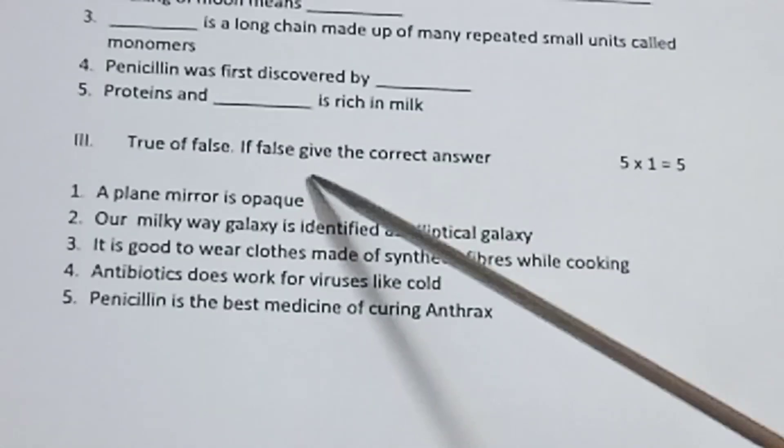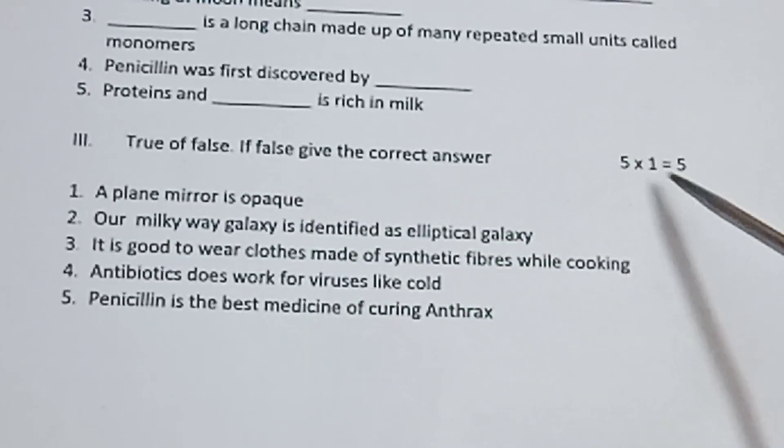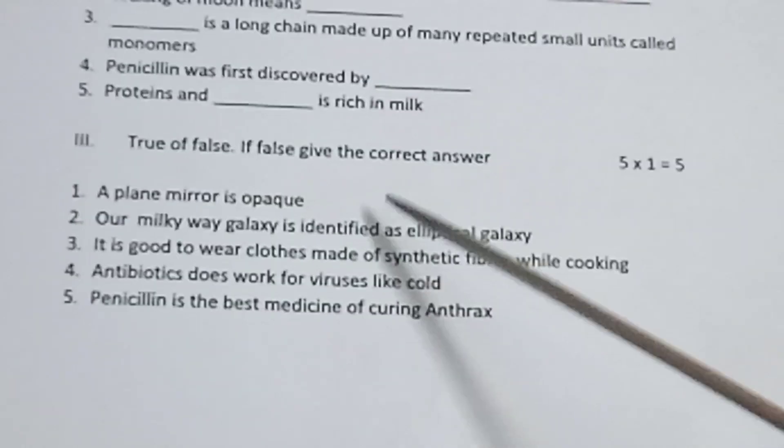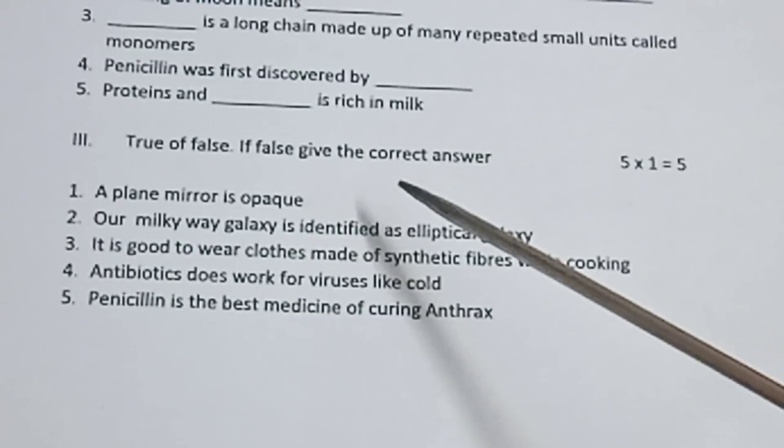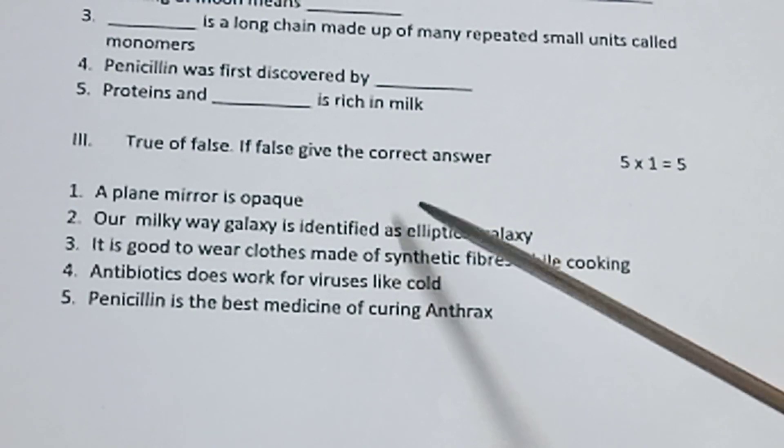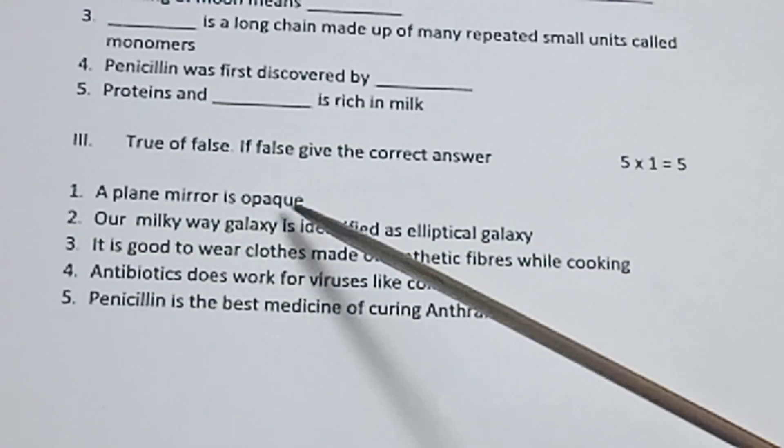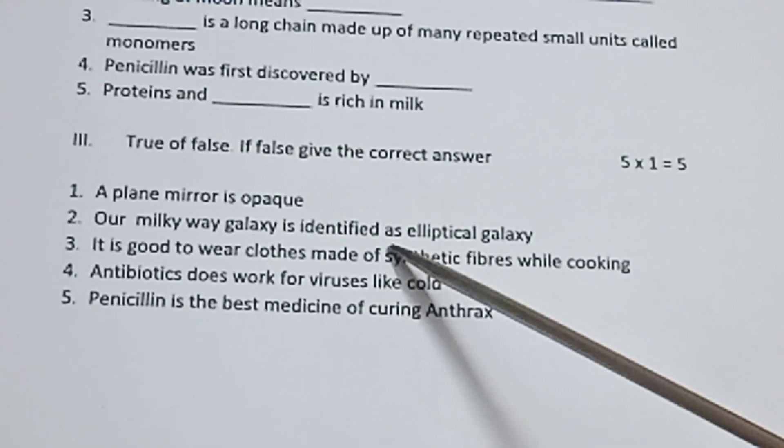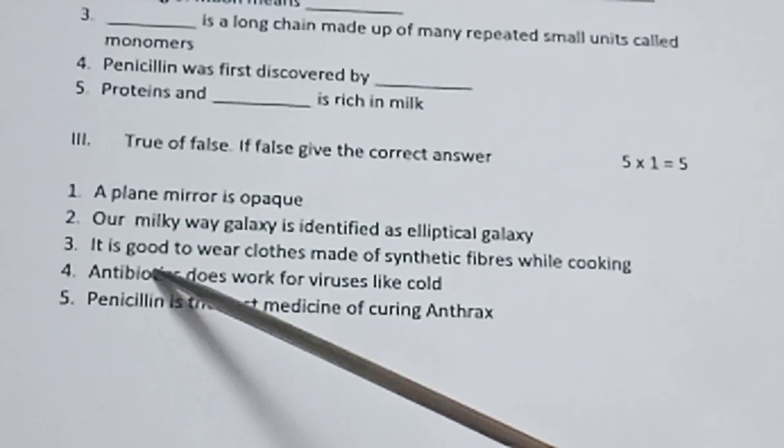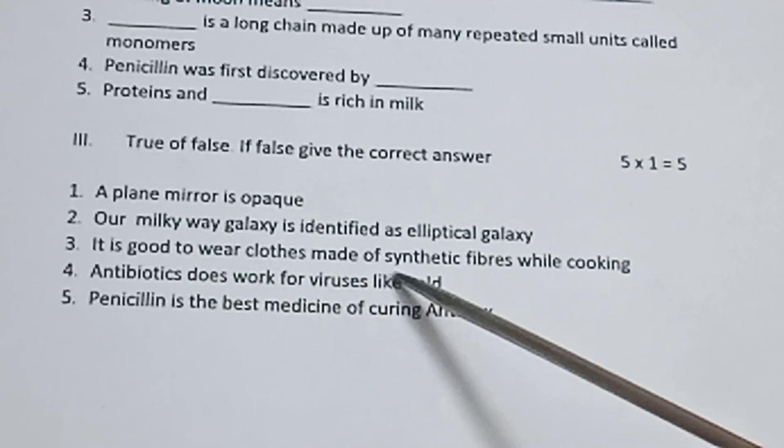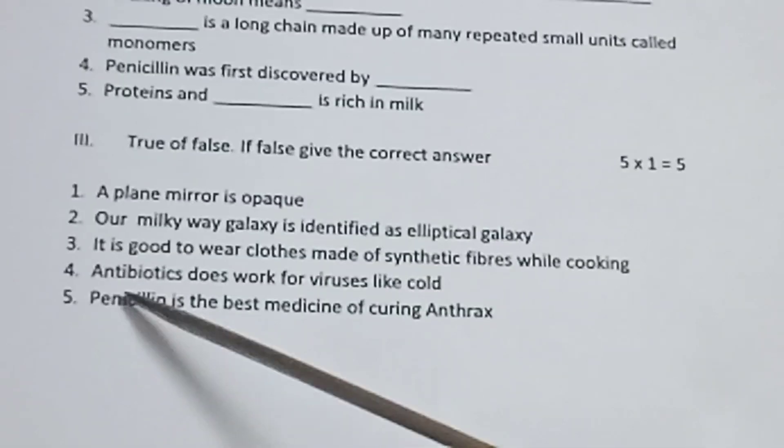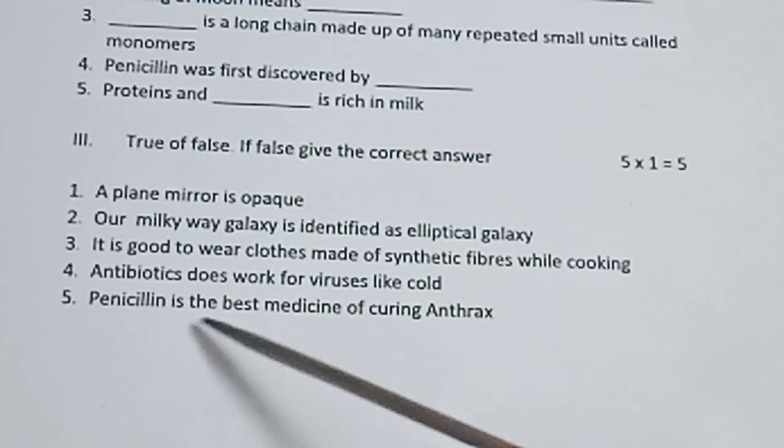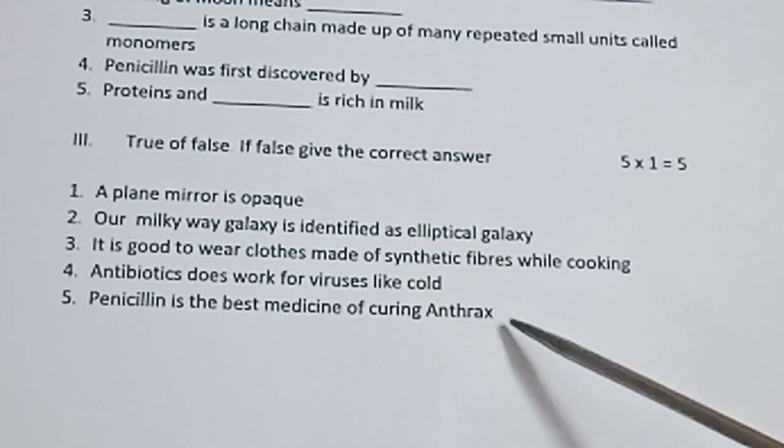Roman numeral 3, true or false. If false, give the correct answer. 5 is equal to 5. Which is the correct statement? First one, a plane mirror is opaque. Second one, our Milky Way galaxy is identified as elliptical galaxy. Third one, it is good to wear clothes made up of synthetic fiber while cooking. Fourth one, antibiotic does work for viruses like colds. Fifth one, penicillin is the best medicine of curing anthrax.